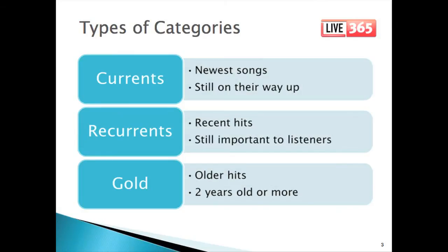We'll start with some definitions. These are some of the types of categories used by radio programmers to categorize their music. Generally, the categories are grouped chronologically. The first group, Currents, are the newest songs — songs that are still on their way up. This could range from a brand new release to hits that have been popular for several months but are still at their peak.